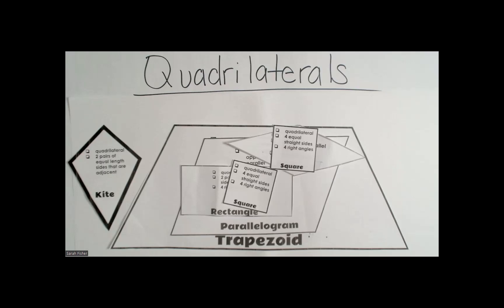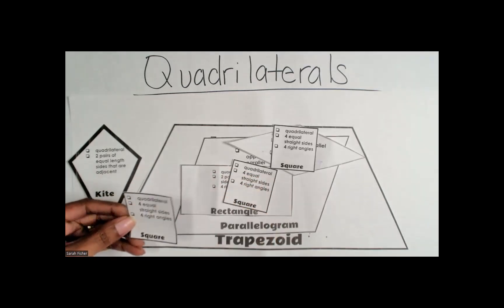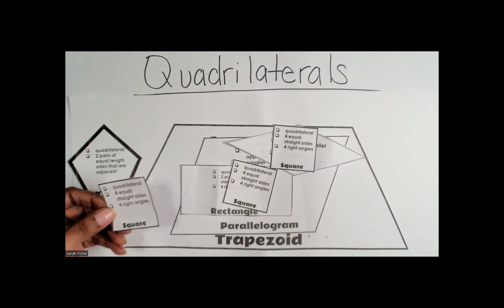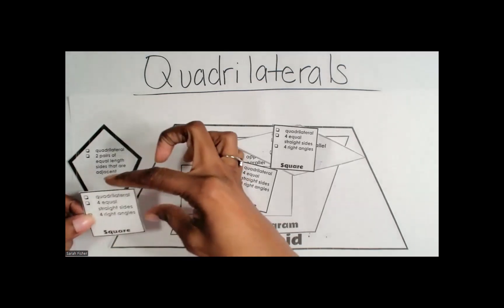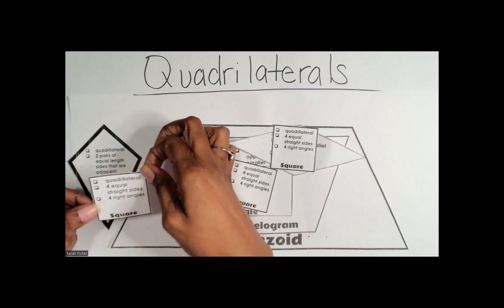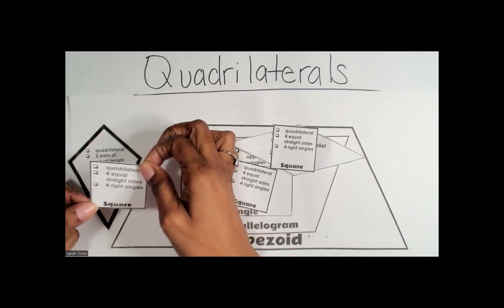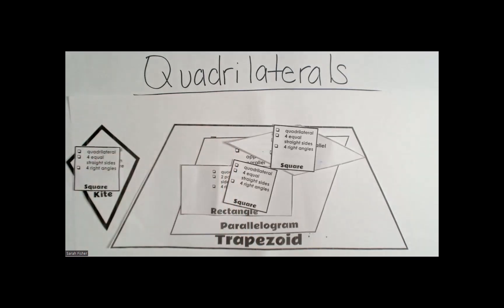Can we subcategorize a square as a kite? Pause the video and explore. Is a square a subcategory of a kite? Does it possess all the attributes of a kite? Is it a quadrilateral? Yes. Does it have two pairs of equal-length sides that are adjacent? All sides of a square are congruent, so there are two pairs of equal-length adjacent sides—these two share a vertex and these two share a vertex. So yes, a square is a subcategory of a kite.